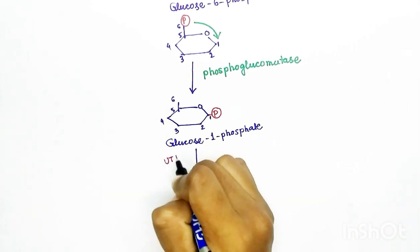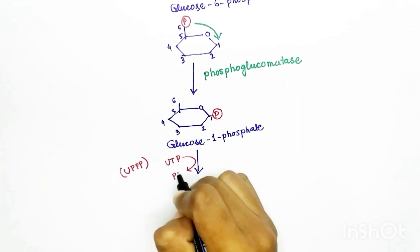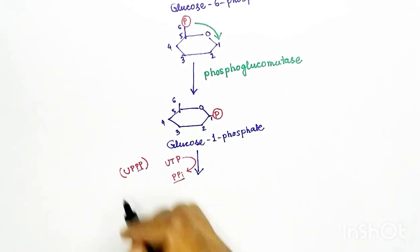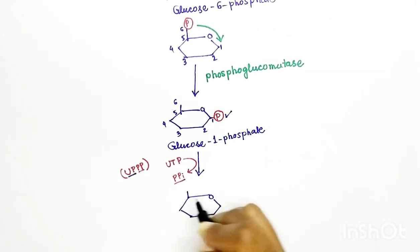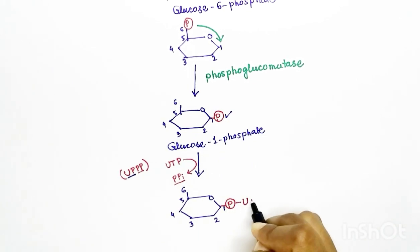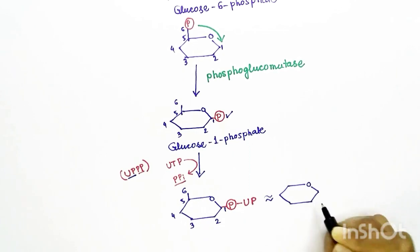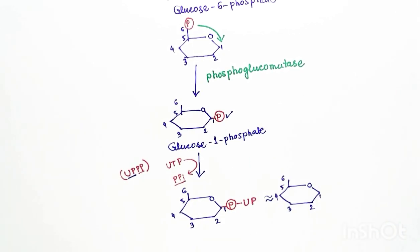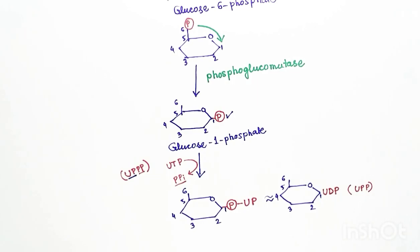Now in the next step, one molecule that is uridine triphosphate, which is having three phosphate groups, will come into play. That uridine triphosphate will leave the two phosphate behind and it will add up to the glucose-1-phosphate with only one phosphate group with it.